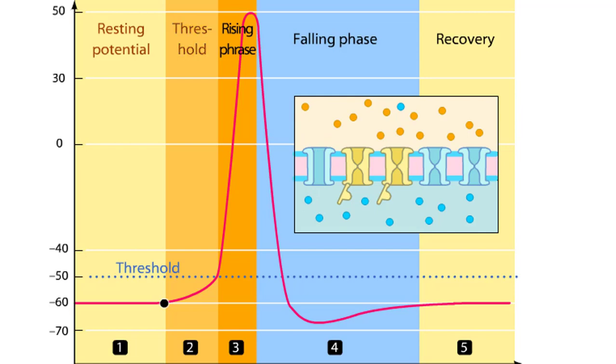As a depolarizing stimulus arrives at our segment of the membrane, a few sodium channels open, permitting sodium ions to enter the neuron. The increase in positive ions inside the cell depolarizes the membrane potential, making it less negative, and brings it closer to the threshold at which an action potential is generated.